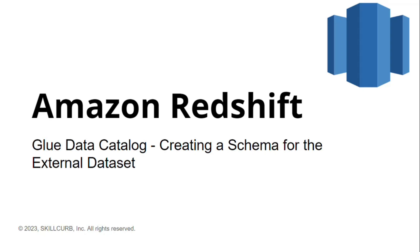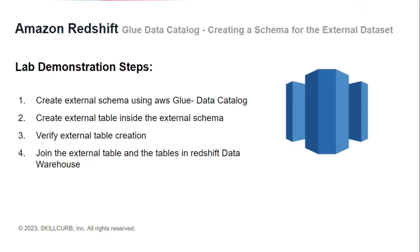Hi, I am Eliza Tanvir from Skillcurb. In this video, you will learn how to create a schema for an external dataset using Glue Data Catalog. For that, we will first create an external schema using the AWS Glue Data Catalog, then create an external table inside the external schema, then verify the external table creation, and finally join the external table with the tables in our Redshift Data Warehouse.